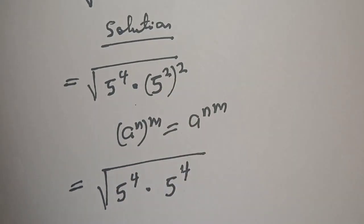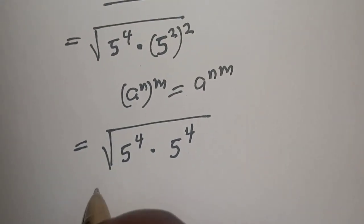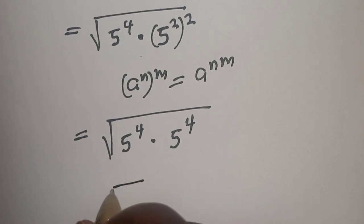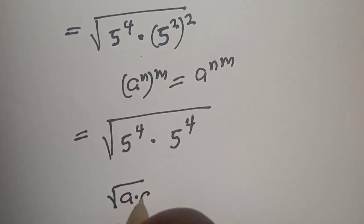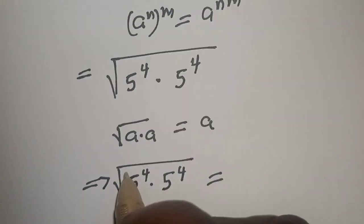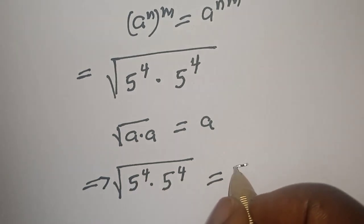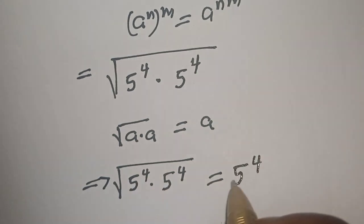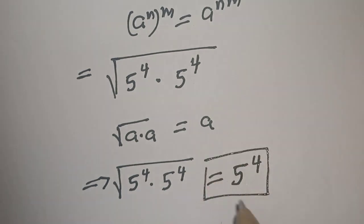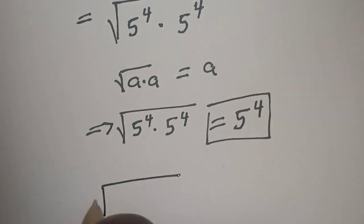Take note that if you have square root of a multiplied by a, this is equal to a. So square root of 5 raised to power 4, multiplied by 5 raised to power 4, is equal to 5 raised to power 4, and this is the final answer.